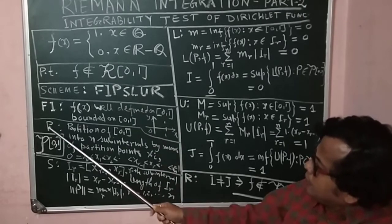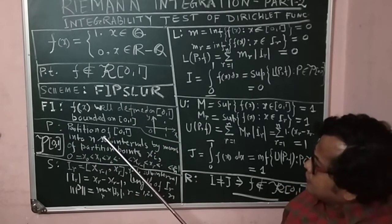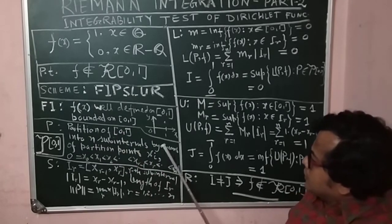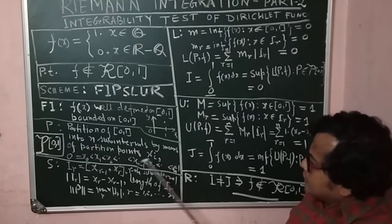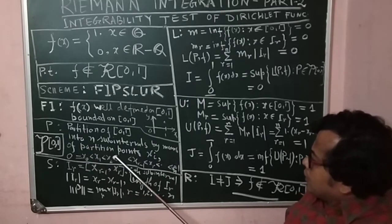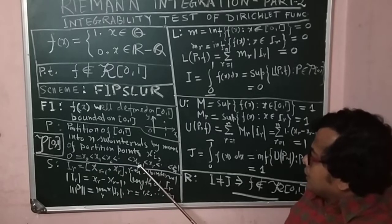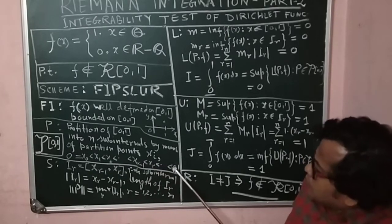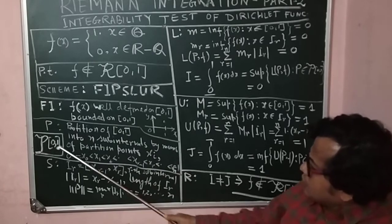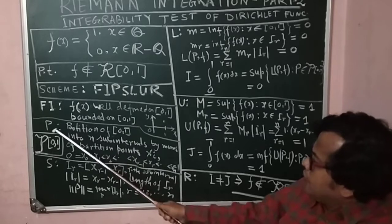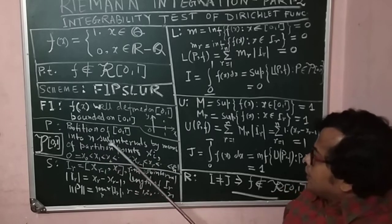What is P? P is the partition of [0,1] into n sub-intervals by means of partition points x_i, where 0 = x_0 < x_1 < x_2 < ... < x_{r-1} < x_r < ... < x_n = 1. We denote by script P[0,1] the set of all partitions P with n sub-intervals.